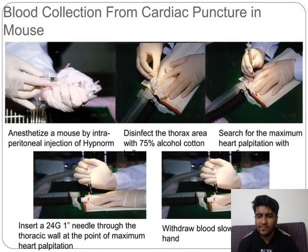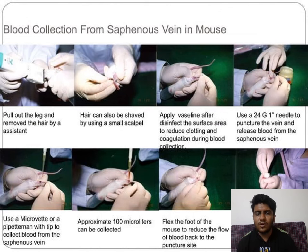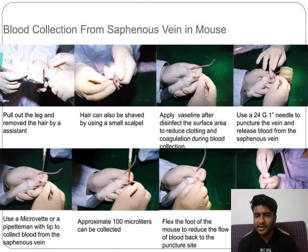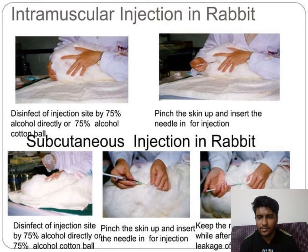Cardiac puncture is an invasive terminal method — disinfect the thorax, check palpitations of the heart, and insert a 24-gauge needle (19 and 21 gauge are also available but 24 is most common). For cephalic vein: first shave the particular part using a small scalpel, remove hair, apply vaseline, clean the area, and insert the required needle. Rabbits are larger animals and must be handled with care.